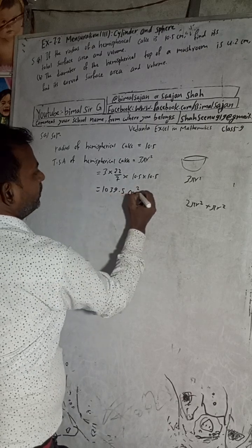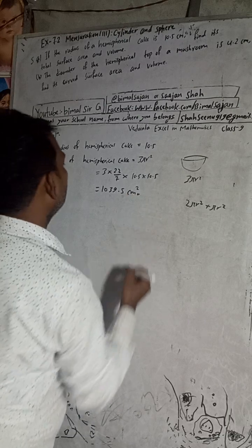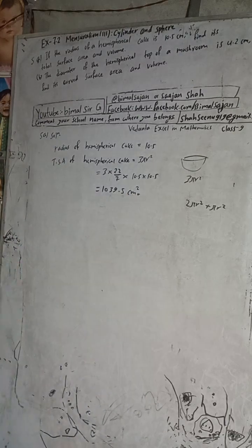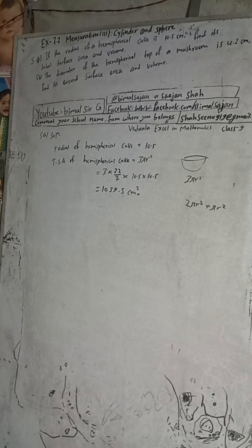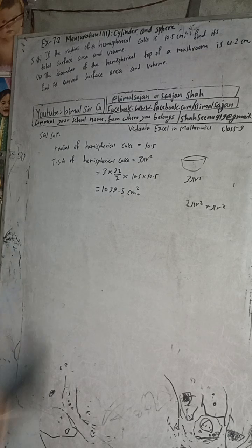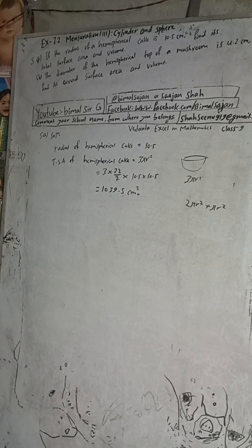As per the book, the answer is given as 1039.4 — which is very close to our calculated value of 1039.5. So this is the required solution for the total surface area.